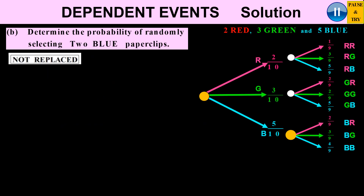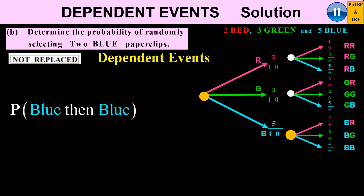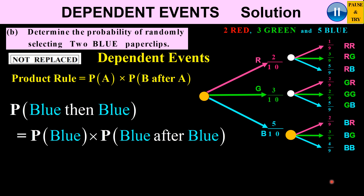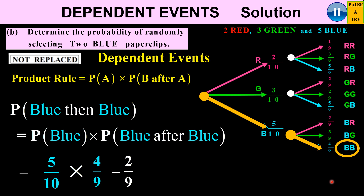Let's consider an example: the probability of blue then blue. These are dependent events because there's no replacement. The probability is the probability of the first event times the probability of the second event given the first has happened. Probability of blue is 5 over 10; then probability of blue again with no replacement is 4 over 9. So 5 over 10 times 4 over 9 gives 2 over 9. That is blue then blue with no replacement.